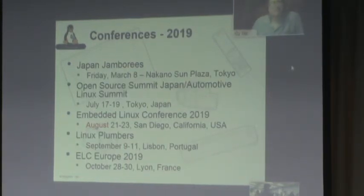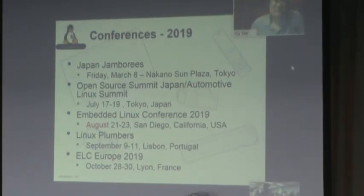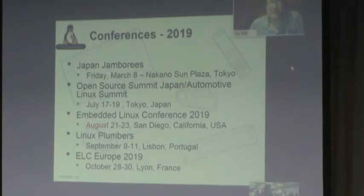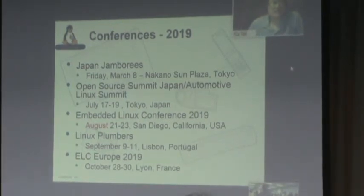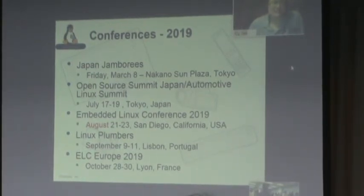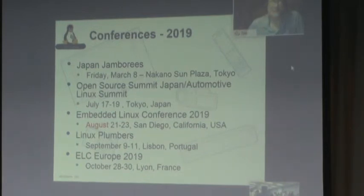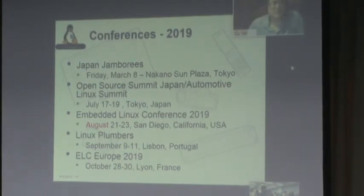Looking at what's coming up: we've got the Japan JamBoree today — you guys are at it. The Open Source and Linux Summit in Japan and the Automotive Linux Summit are in July in Tokyo. If you're interested in the Embedded Linux Conference, this year it's in the fall in August in San Diego. Then Plumbers in September and ELC Europe in October — a lot of stuff going on in the fall.